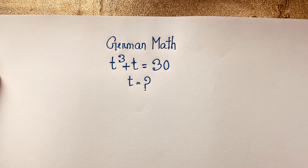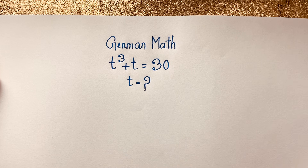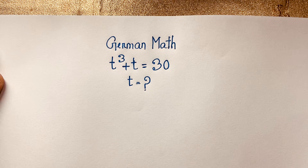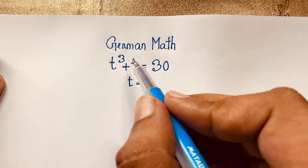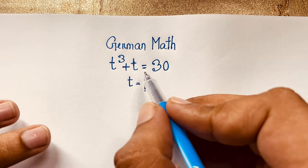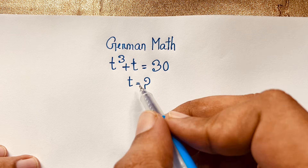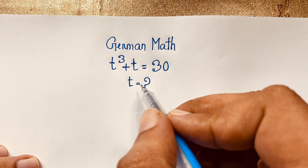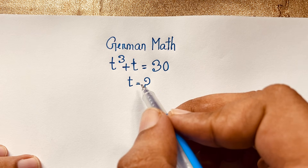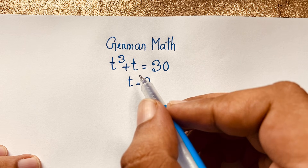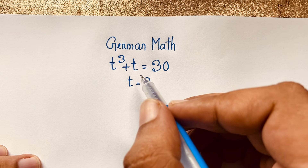Hello everyone, welcome to Rasha's Classroom. Today we have solved an interesting German maths problem: t to the power 3 plus t is equal to 30. What is t? How to solve this interesting cubic equation?